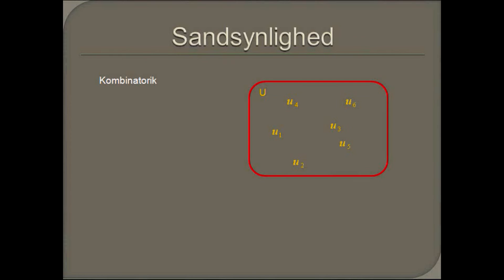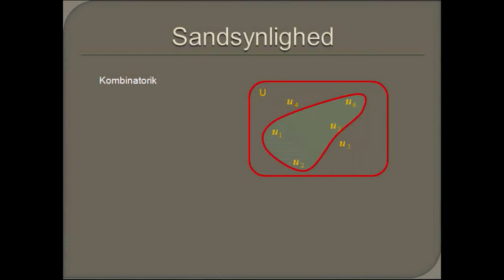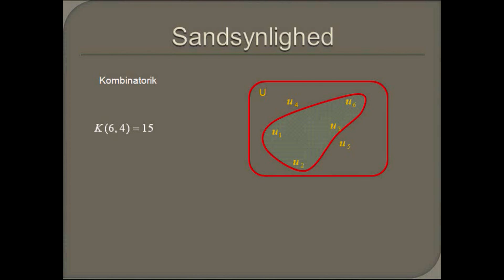Kombinatorik er teorien for, hvor mange måder en valgproces kan gennemføres på. Tager vi udgangspunkt i vores terningekast, kan vi se at der er mange måder man kan udtage en mængde på fire mulige udfald fra en mængde på de seks udfald. Der er en nem formel man kan anvende: N er antal mulige udfald, og r er antallet af den mængde der kan udtages fra en n-mængde. I vores eksempel er n lig 6 og r er lig 4. Vi får altså at der er 15 måder man kan udtage en mængde på 4 ud af 6 mulige udfald.